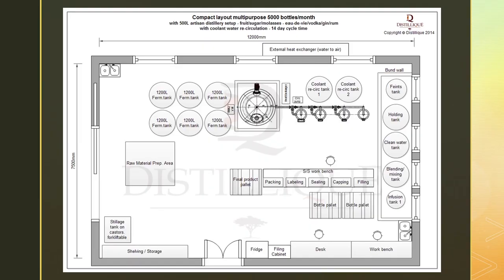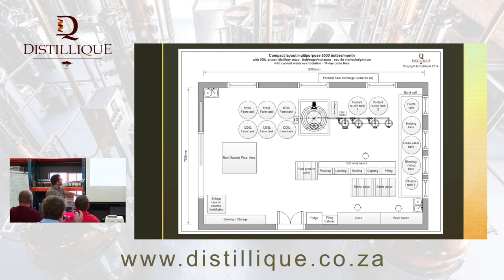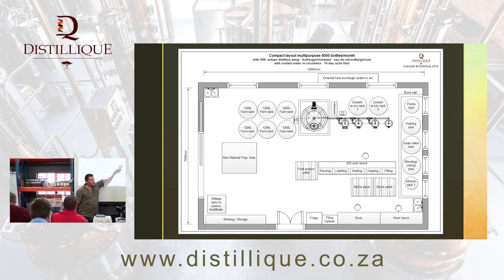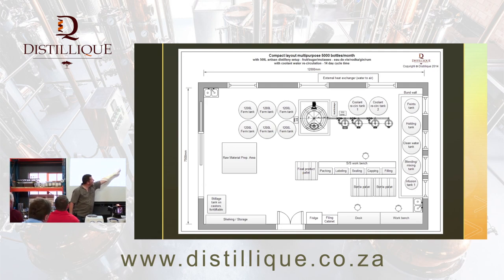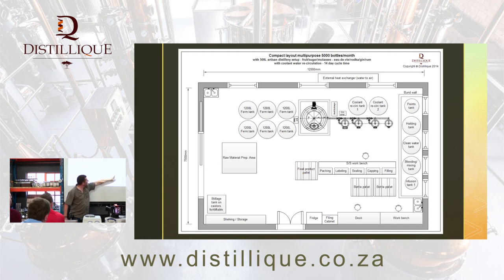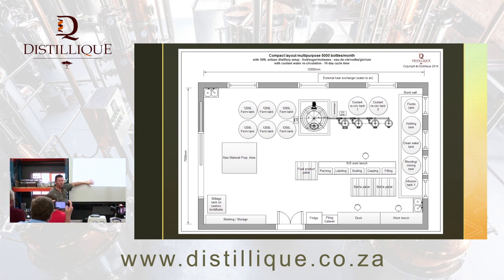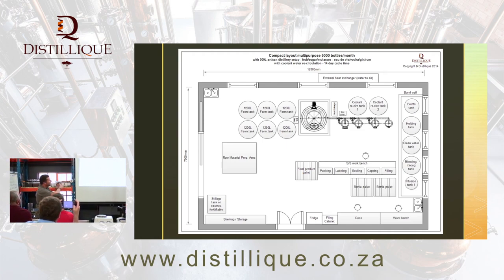Example floor layouts. This one is 12 meters by 7.5 meters and can do 5,000 bottles a month. You could make it smaller, but it's quite big because it uses a multi-column still, which takes up space. Raw material prep area, making the fermentation, into the fermentation tanks, feeding the still. From the still: a faint tank for heads and tails, a holding tank for distillate hearts, a clean water tank, a blending and mixing tank for diluting to strength, and an infusion tank. That feeds straight into the bottling line with bottle pallets, bottle washer, filler, capper, sealer, labeler, packing and final product. Over here: lab area, filing cabinet, fridge for yeast and enzymes, desk, workbench. Clean storage as far as possible from the dirty area.